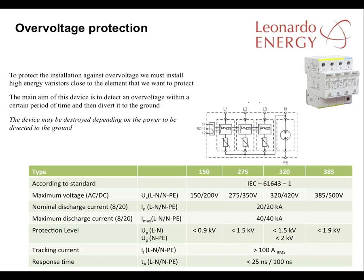To protect the insulation against overvoltage, high-energy varistors must be installed close to the element to be protected. The main aim of the varistors is to detect any overvoltage quickly and then divert it to earth. The varistor may be destroyed in the process, depending on the level of power to be diverted.